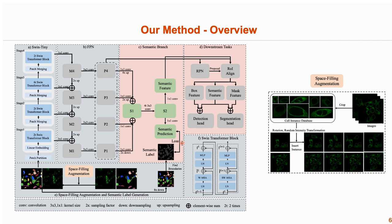Second, we propose to embed a three-class semantic branch to the transformer backbone to effectively capture semantic information. The prediction of boundary semantics improves the discrimination of cell boundaries, and the prediction of foreground and background semantics improves segmentation integrity in regions with weak signals.